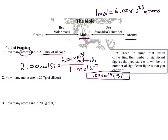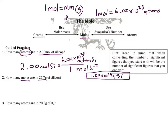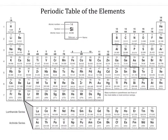The next problem gives us 27.7 grams of silicon and asks for moles of silicon. We're given grams and need moles. We know that one mole is equal to the molar mass in grams, and we get the molar mass from the periodic table. For silicon, let's look at the periodic table — silicon's molar mass is shown there.